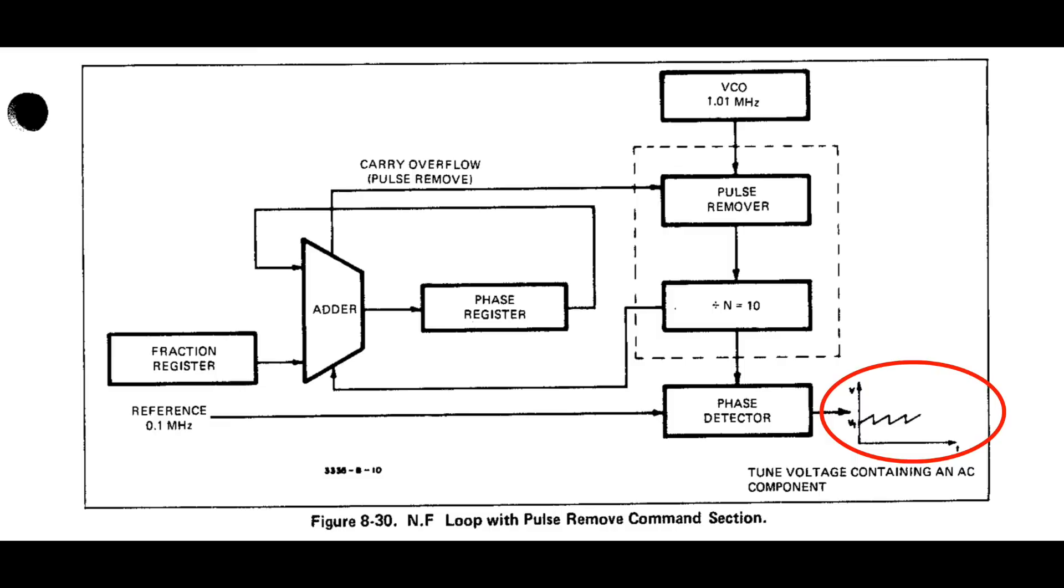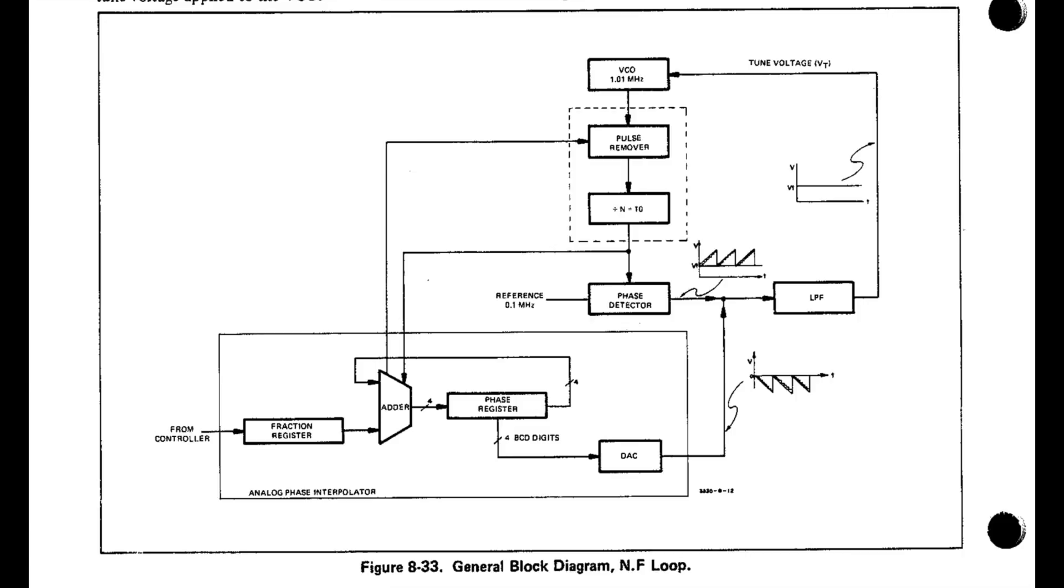In order to get rid of that, the fractional-N counter calculates the predicted phase error and uses a D-to-A circuit to add an approximate opposite sawtooth to the resulting error signal, so it is almost constant. At the end of the cycle, the digital correction takes over and gets it exact.